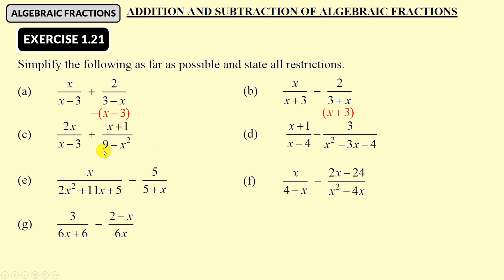Look at the next one: x minus 3 is fine. But 9 minus x squared is not okay — we need the x squared first. And the x squared is negative there. So we're going to take out a negative and make that x squared, and this becomes negative 9. If we took this bracket away again we'd still have negative x squared and positive 9, so it still has the same value. But now we have x squared and then the number.